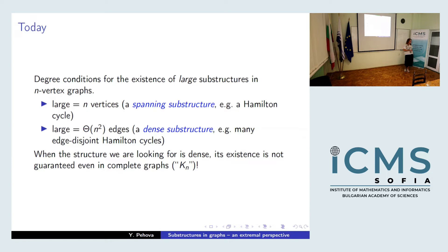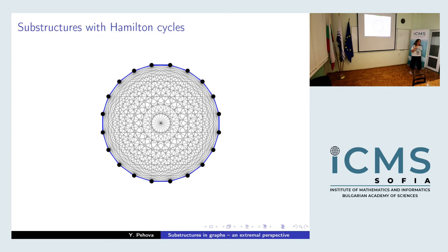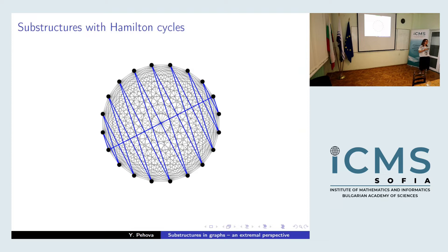Here's a complete graph and a Hamilton cycle in it. If I want to find a dense collection of edge-disjoint Hamilton cycles, it's not clear what to do. But if I choose a particular Hamilton cycle where all edges have different lengths, I can rotate it. After linearly many rotations, I start getting a dense collection of Hamilton cycles.